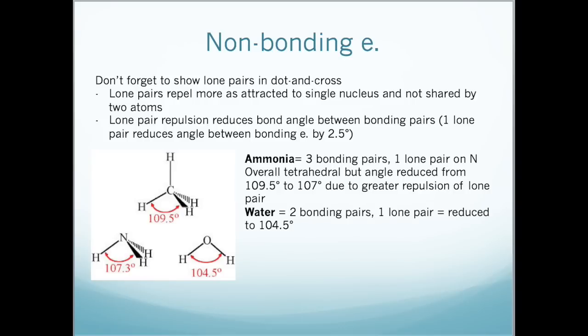Lone pairs repel because they are attracted to a single nucleus and not shared by two atoms. The lone pair repulsion means that there is the reduction in the bond angle between the bonding pairs. Each lone pair of electrons reduces the predicted bond angle between bonding electrons by approximately 2.5 degrees.